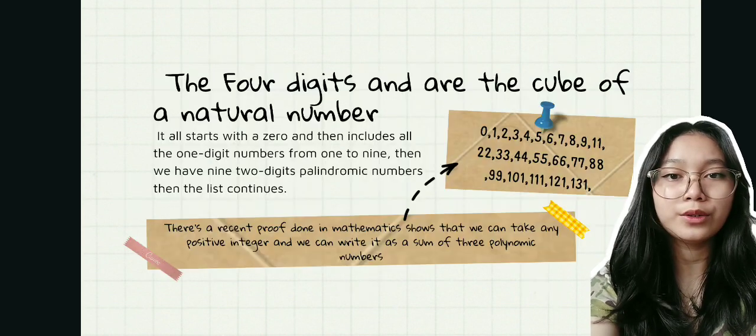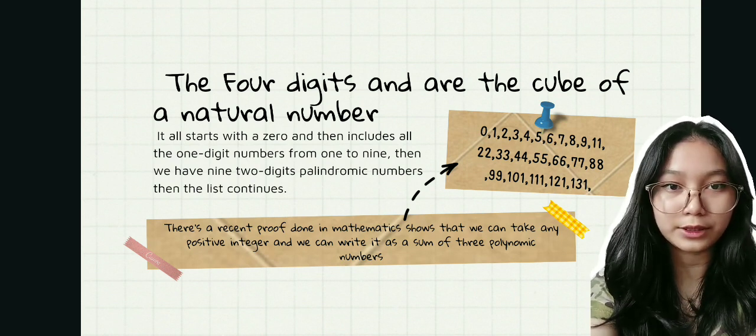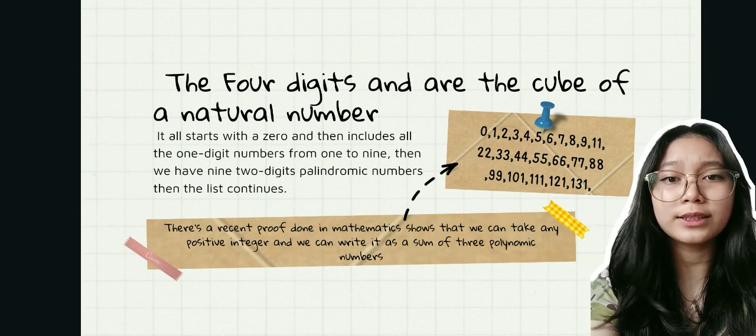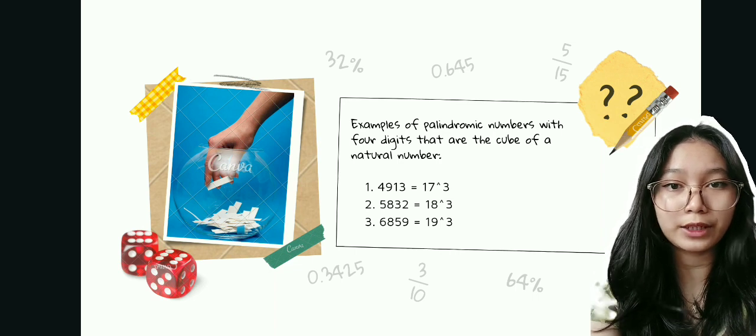And now, for the four digits that are the cube of natural numbers. Here are some examples of palindromic numbers with four digits that are the cube of a natural number.